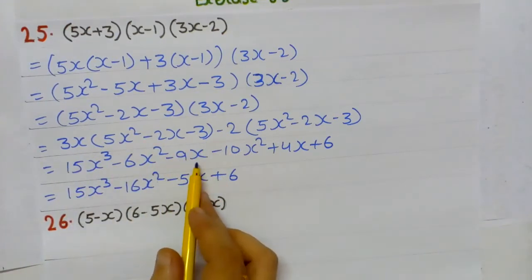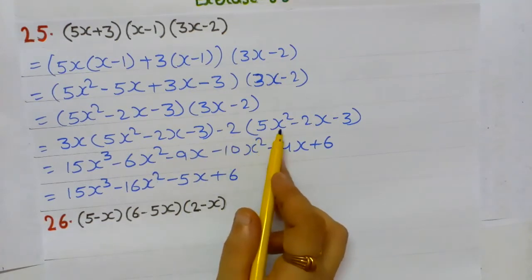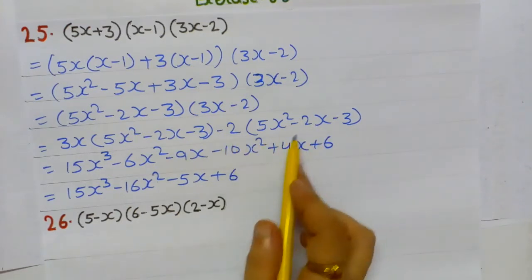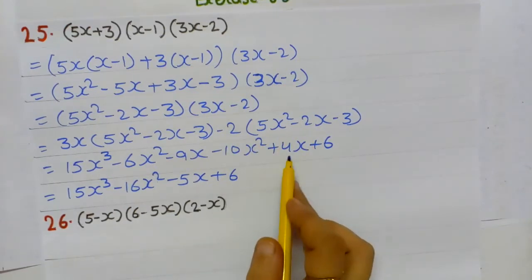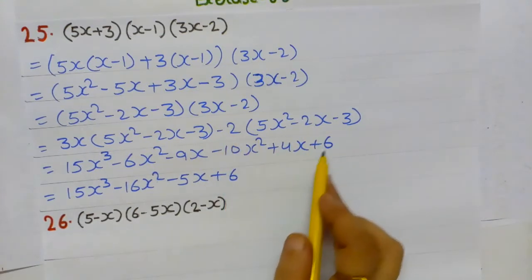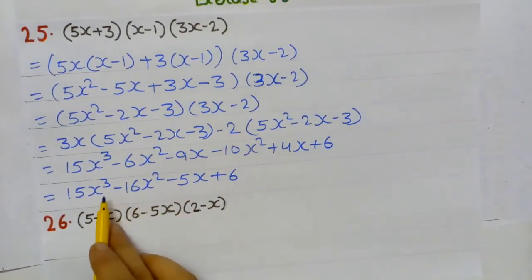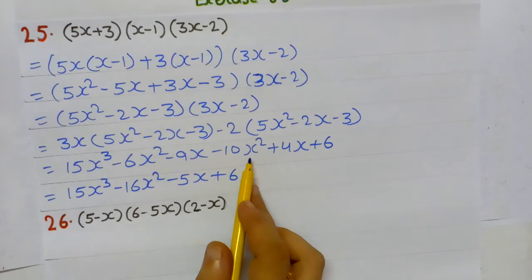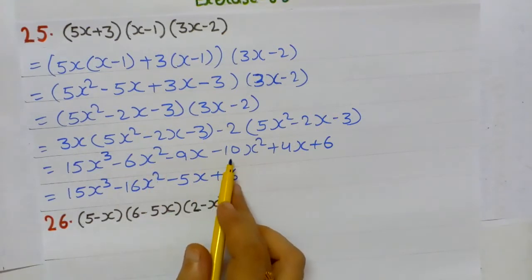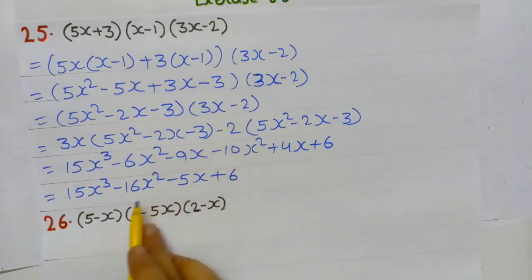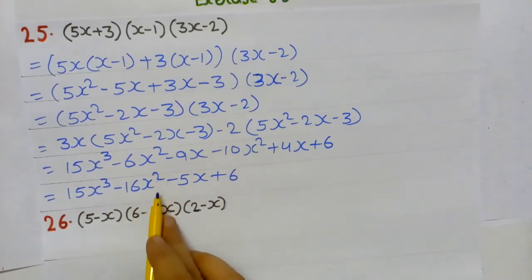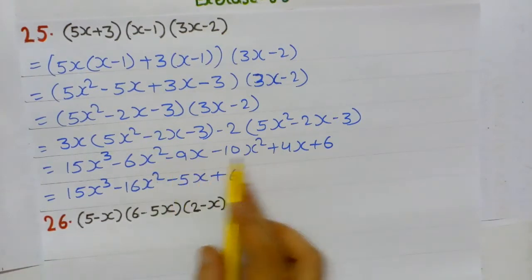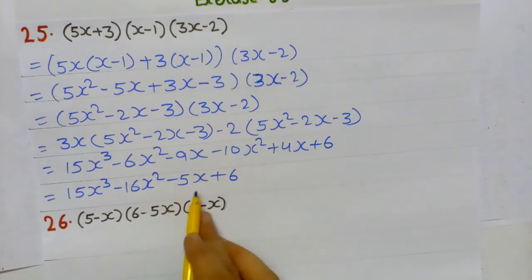3x × 5x² = 15x³; 3x × (-2x) = -6x²; 3x × (-3) = -9x. Then -2 × 5x² = -10x²; -2 × (-2x) = +4x; -2 × (-3) = +6. Combining like terms: 15x³; -6x² - 10x² = -16x²; -9x + 4x = -5x; constant +6.